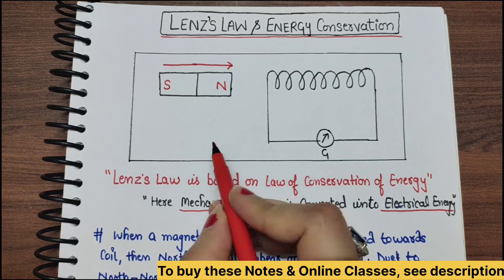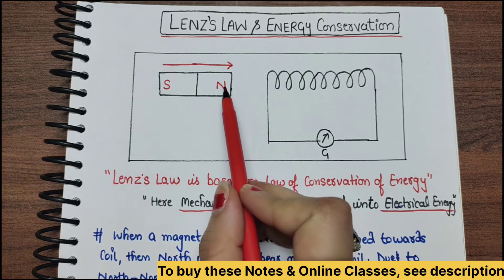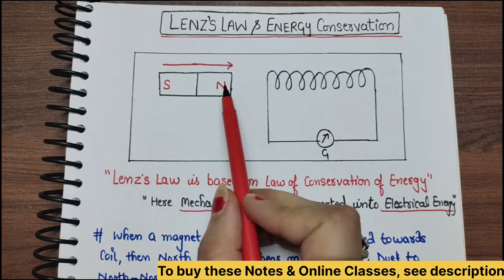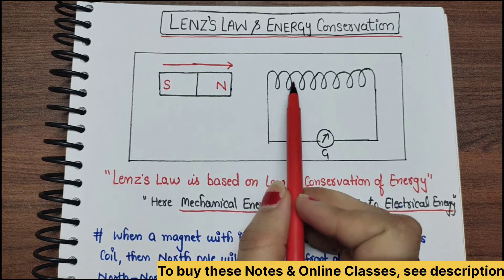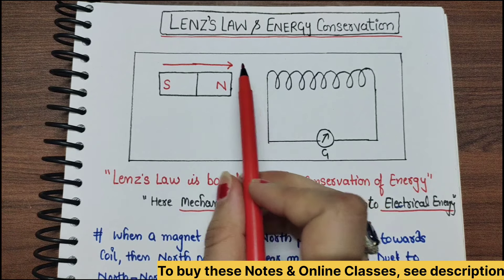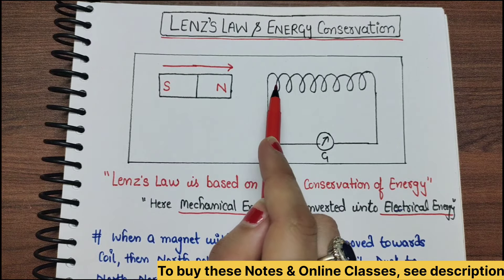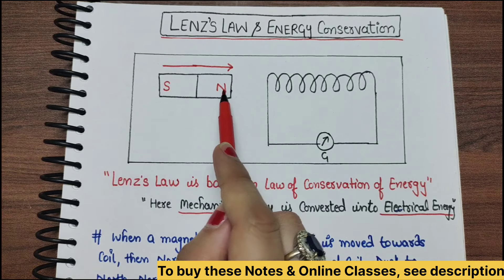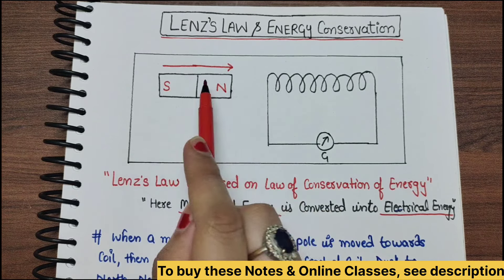First of all, let's recap what is Lenz's law. Lenz's law says that when you change the magnetic flux and you have an induced current in the other coil, the direction of that induced current will be in such a way that it will oppose the cause of the induced current.